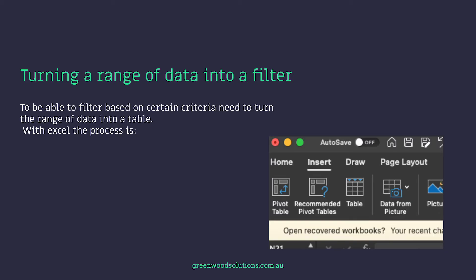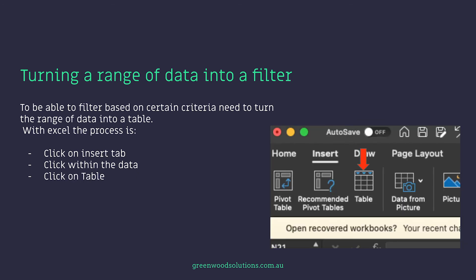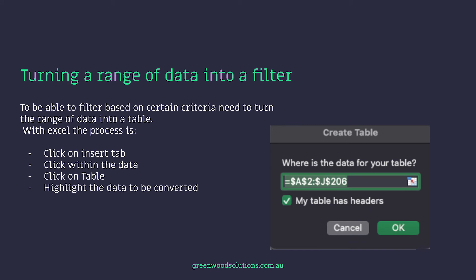You've opened your spreadsheet, put some headings in columns, and then you run down the side in the rows the various tasks. Now to get more out of this information, you have to convert that range of data into a table. With Excel, which I'm using, the process is as follows: click on the Insert tab, click within the data anywhere within the data, click on Table, highlight the data to be converted, check My Table Has Headers, and then click OK. You now have a filterable table.